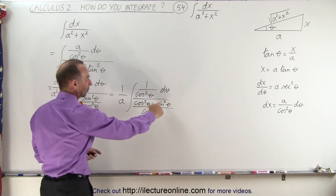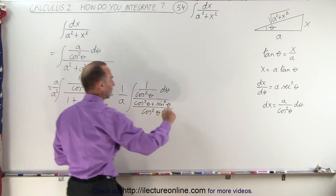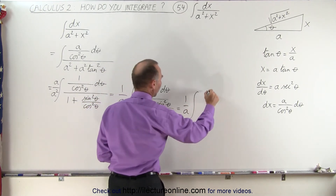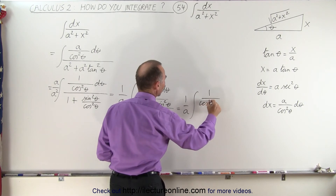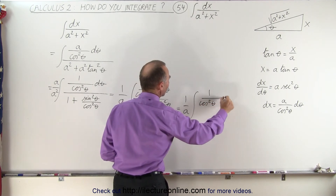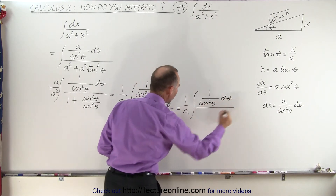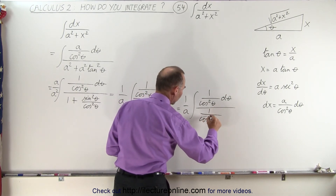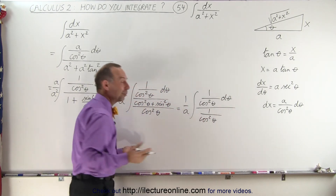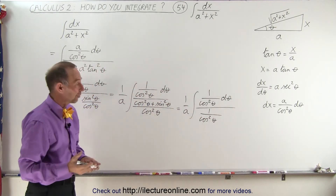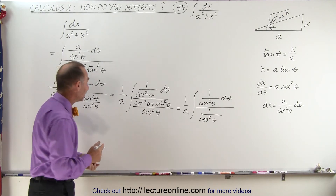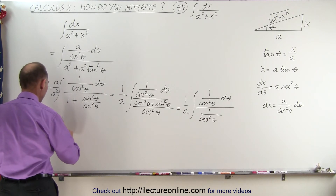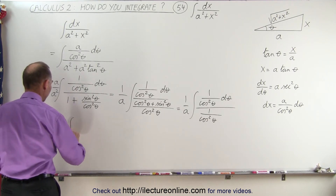You realize that cosine squared plus sine squared is equal to 1. So this becomes 1 over a times the integral of 1 over the cosine squared of theta d theta. And in the denominator we get the same thing, 1 over the cosine squared of theta. That's equal to 1 times d theta. So this whole integral simply becomes 1 over a times the integral of d theta.